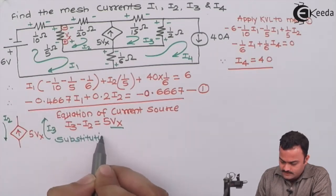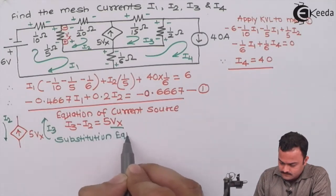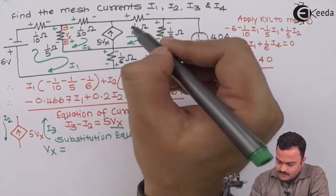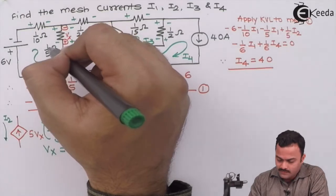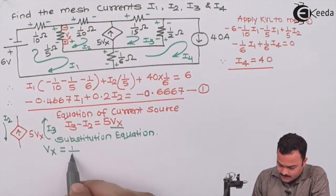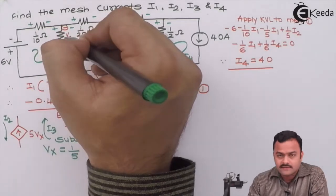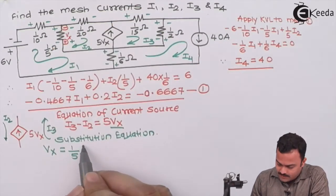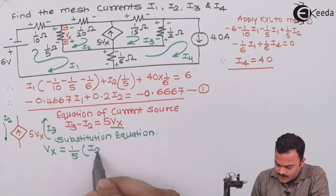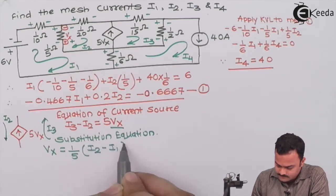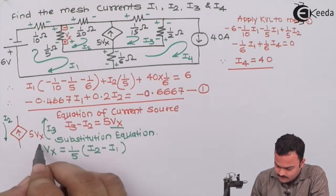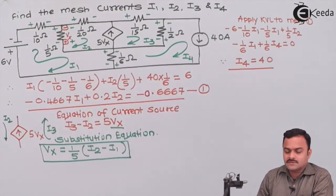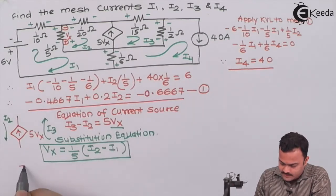vx is the variable which is given by them so we need a substitution for the vx. The substitution equation will be: vx is voltage across 1/5 ohm so it's 1/5 and the polarity given by them is plus minus in red ink matching with this current which is i2 so I can say it is 1/5 multiplied by i2 minus i1.